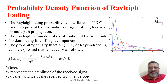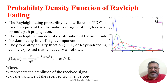The Rayleigh fading probability density function is frequently employed in wireless communication systems to represent the fluctuation in signal strength caused by multipath consolidation. It describes the distribution of the amplitude of the signal in a fading channel without a dominating line of sight present. The received signal is the combination of many electromagnetic signals arriving from various directions due to scattering with buildings, clarity, or other obstacles.